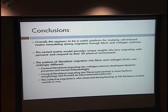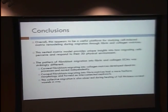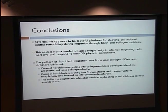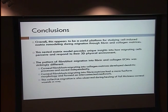In conclusion, this appears to be a useful model for studying matrix remodeling during migration through both fibrin and collagen matrices. The model provides unique insights into how migrating cells perceive and respond to their 3D environment. The migration pattern between fibrin and collagen was very different: cells migrating into collagen did so individually with dendritic processes, whereas cells migrating into fibrin worked together and built interconnected meshworks. This collective migration is also observed during healing of full-thickness corneal wounds in vivo.